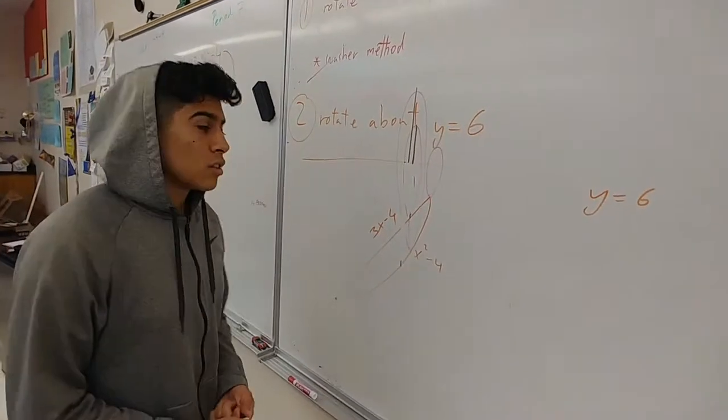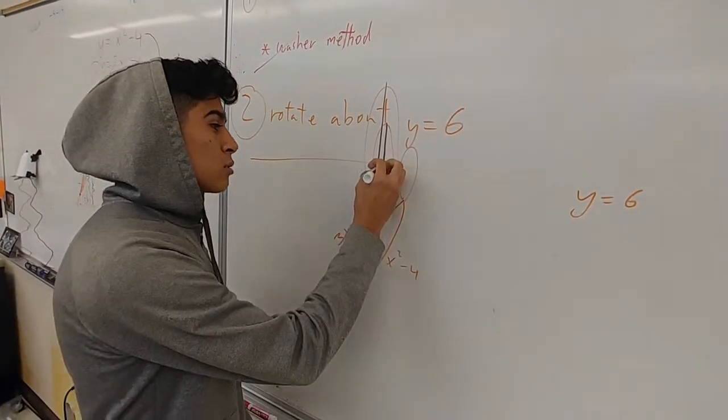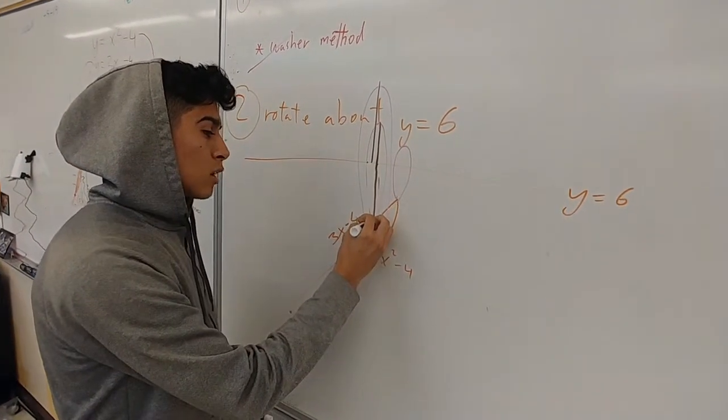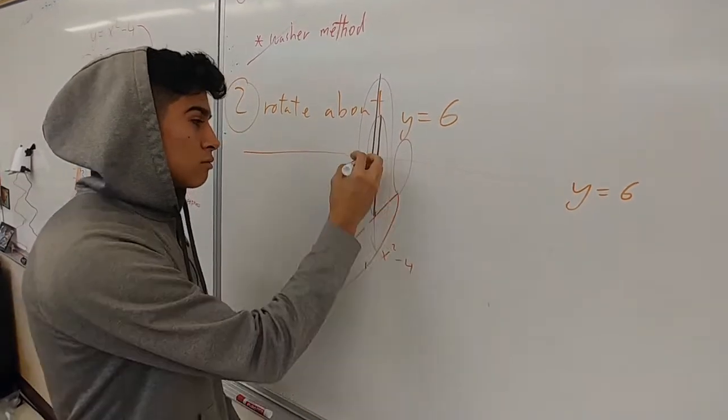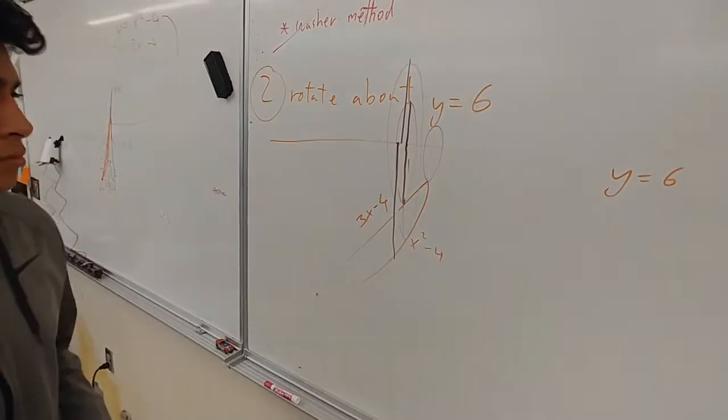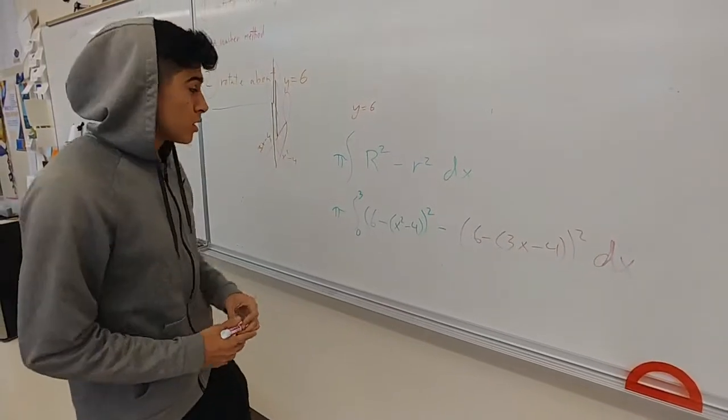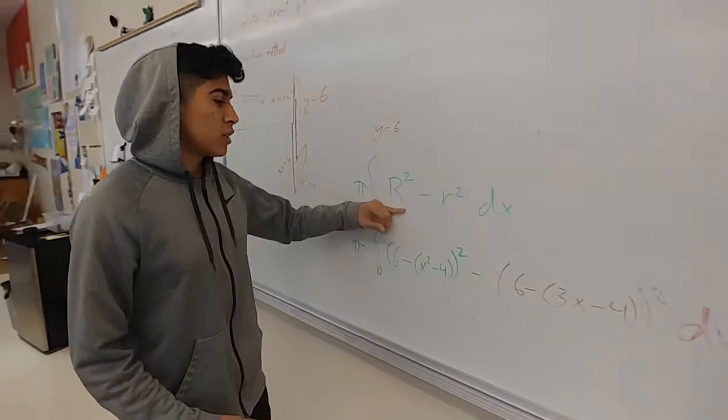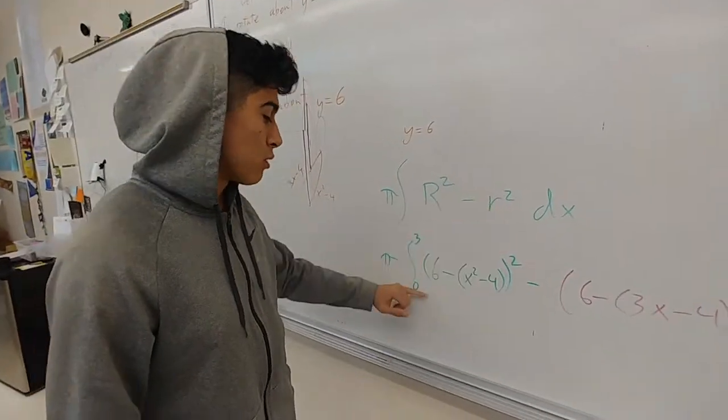So like I did before, we have the small radius, which is from the horizontal line to the line, and then from the horizontal line to the parabola is our bigger radius. To use our washer method, we need a big radius and a small radius.